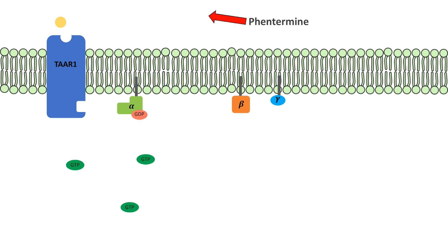This GPCR then undergoes a conformational change and binds the alpha, beta, and gamma subunits constituting the G-protein.